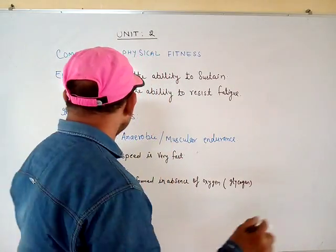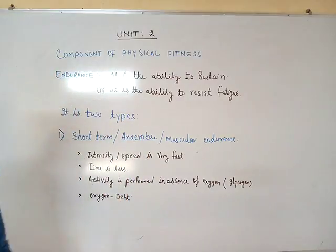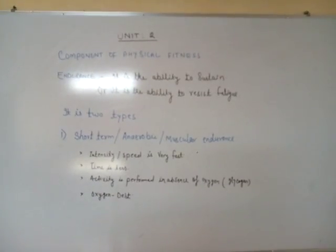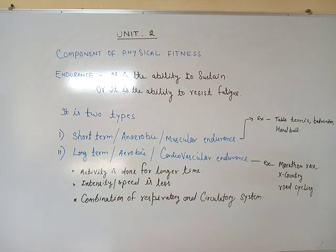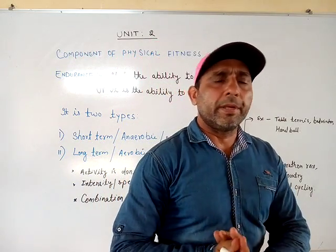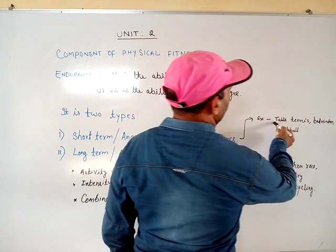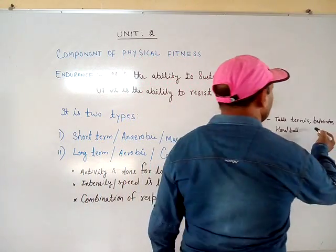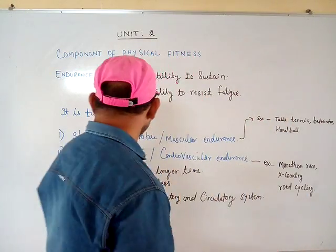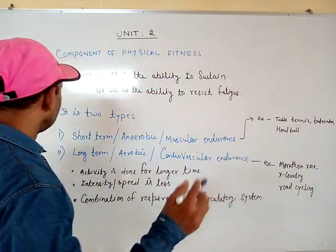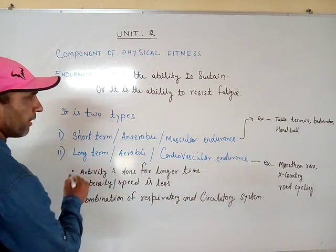So that is all about the anaerobic or muscular endurance — it is known by three names. Examples of anaerobic endurance include activities like table tennis. Now we talk about aerobic endurance. Aerobic endurance is also called long-term endurance, because these activities are done for a longer duration.